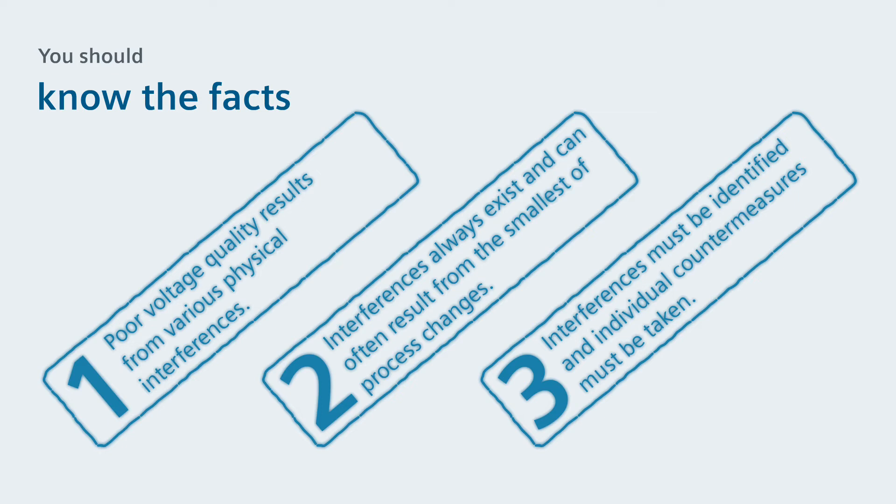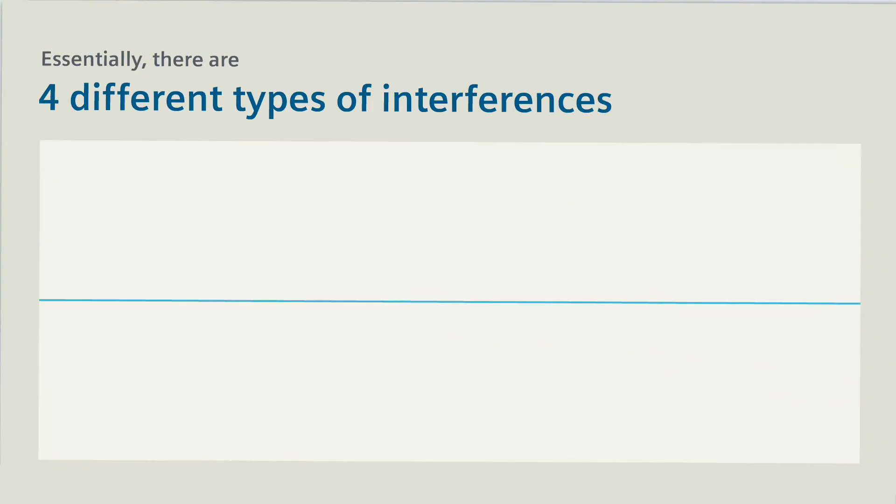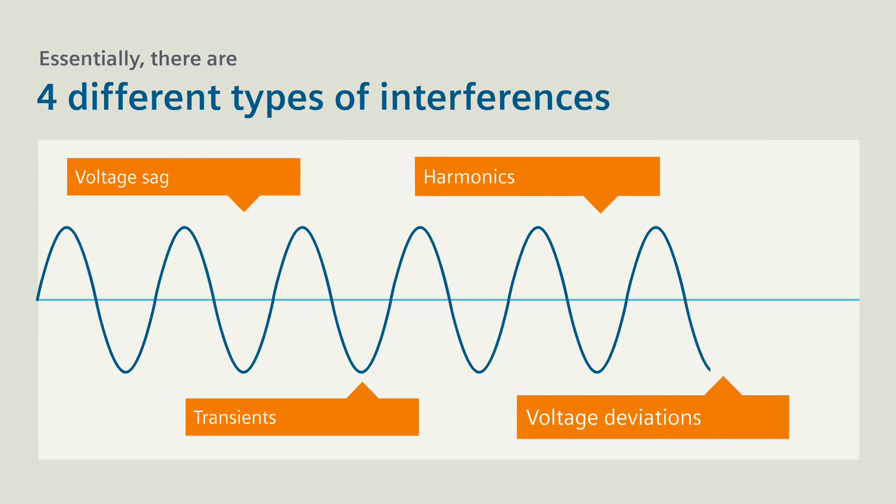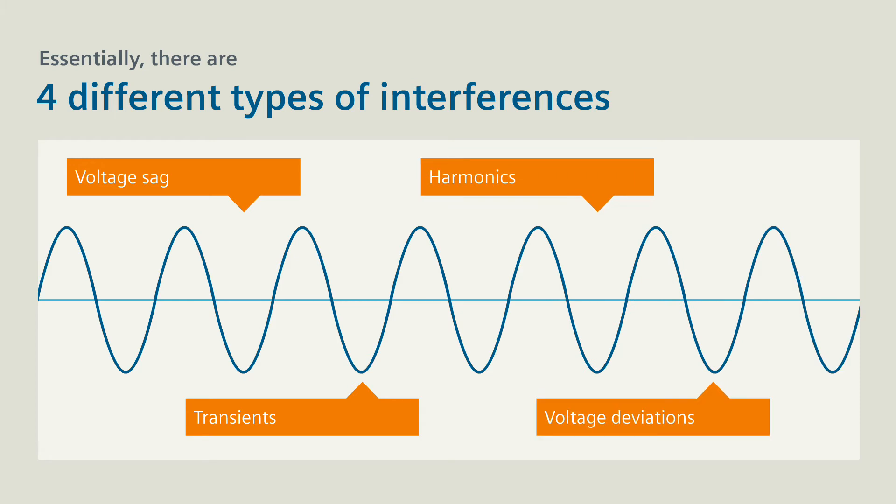Fact 3: Interferences must be identified and individual countermeasures must be taken. Essentially, four different types of interferences affect the ideal voltage curve and with that, the power quality.